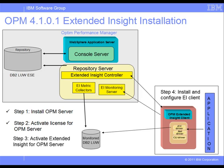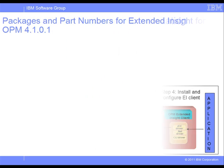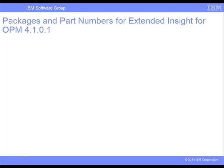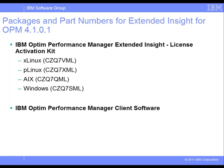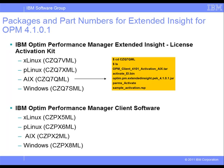Next, we need to install the Extended Insight client on the system where the monitored database applications reside. The Optum Performance Manager Server and the Extended Insight Client can be on the same or different machines. In this example, we will install the Extended Insight client on a different AIX machine. There are two packages needed: the Optum Performance Manager Extended Insight License Activation Kit, and the Optum Performance Manager Extended Insight Client Software. Depending on the platform, there are different files after unzipping or untarring the packages.